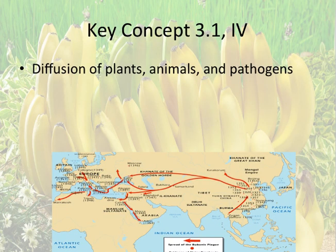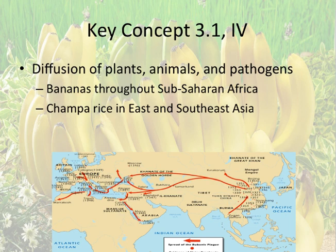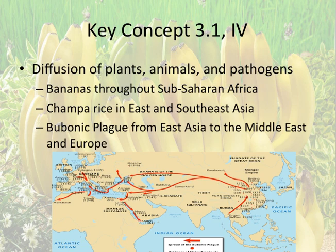Trade routes moved many more things than just goods — plants, animals, and pathogens. Bananas moved throughout sub-Saharan Africa and allowed for population increase. Champa rice had a similar effect on East and Southeast Asia — a type of rice initially cultivated in Vietnam that allowed cultivators to get two, sometimes three yields a year, vastly increasing food production. In addition to these good things, you also see the spread of the plague from East Asia to the Middle East and Europe, which decimated populations. So we're talking all about interaction in this first key concept.